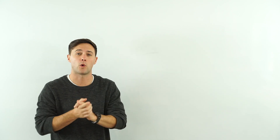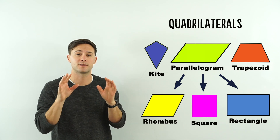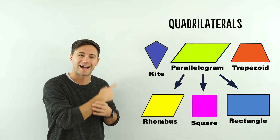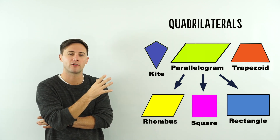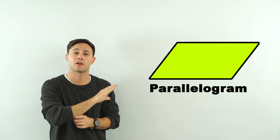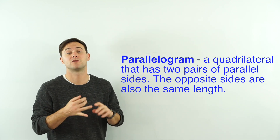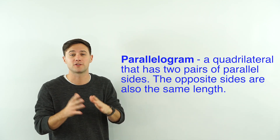Let's focus on just the quadrilaterals. If we look at the quadrilaterals, there are a lot of different kinds, but some have special names because they are special. We've got trapezoids, we've got kites, and then we've got parallelograms — and there are different kinds of parallelograms. So first, what exactly is a parallelogram? It's a quadrilateral that has two pairs of parallel sides, and those opposite sides are also the same length.